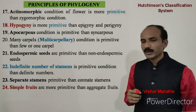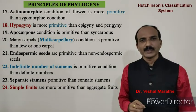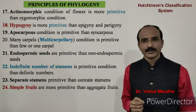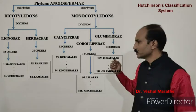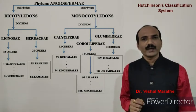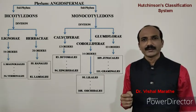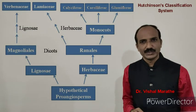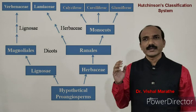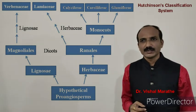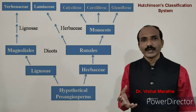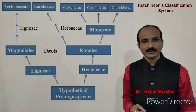These are the 24 dictas or principles of phylogeny given by John Hutchinson. Regarding the outline of this classification system, angiosperms were considered monophyletic in origin, having originated from some hypothetical pro-angiosperm. Hutchinson provided a hypothetical pro-angiosperm model for the origin of angiosperms. The classification system of Hutchinson deals only with flowering plants, included under phylum Angiospermia as distinct from Gymnospermia.